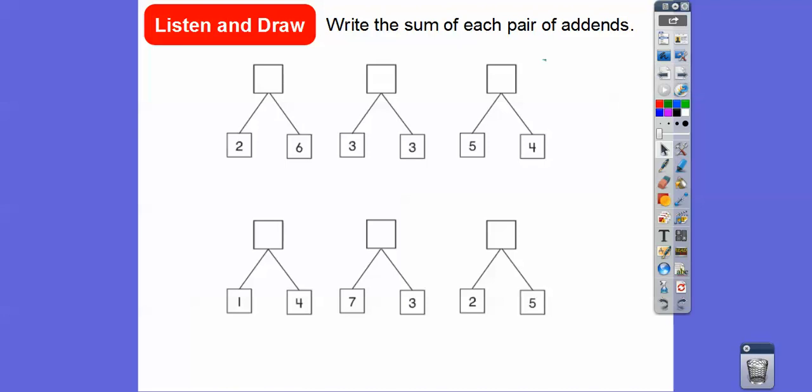There's several ways to do that. So let's write the sum of each pair. Pair is two numbers of addends. All right, so the first one is two plus six. I always take the bigger one, six, and then just add these two, seven and eight. So that's eight right there.